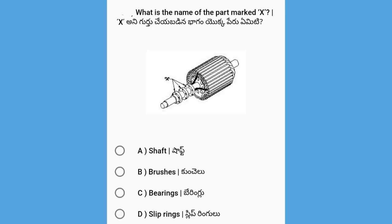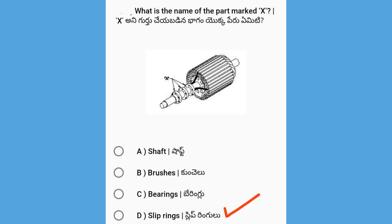Next, what is the name of the part marked X in the diagram? The options are the shaft, the brushes, the bearings, and the slip rings. The answer is the slip rings.